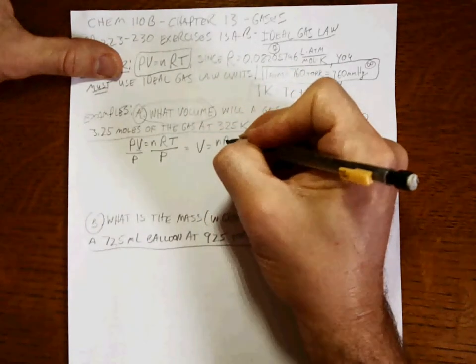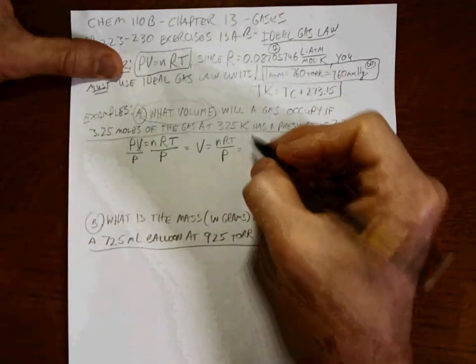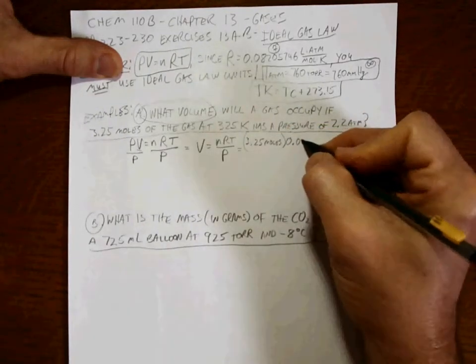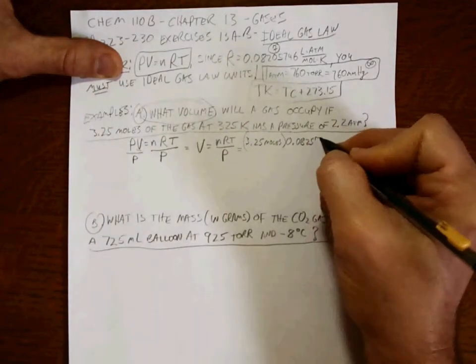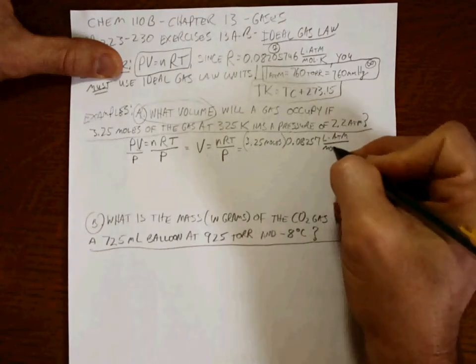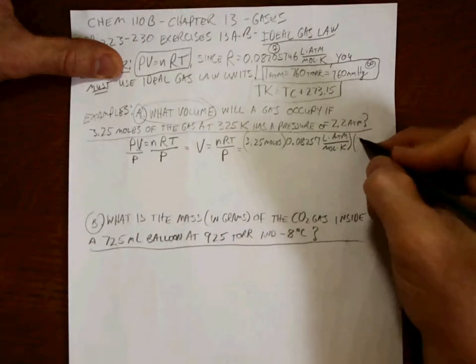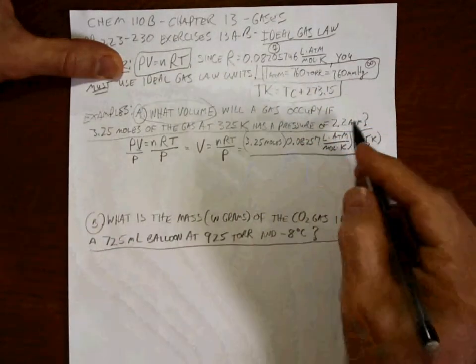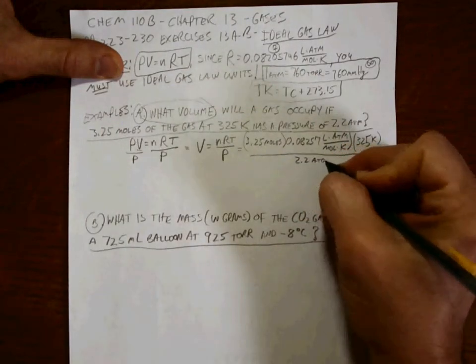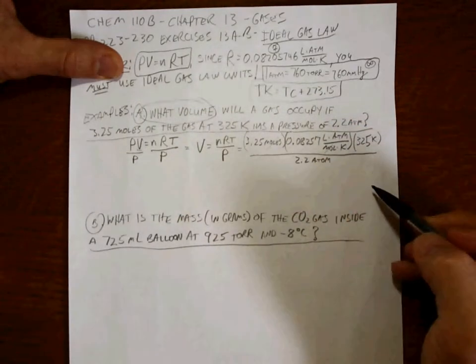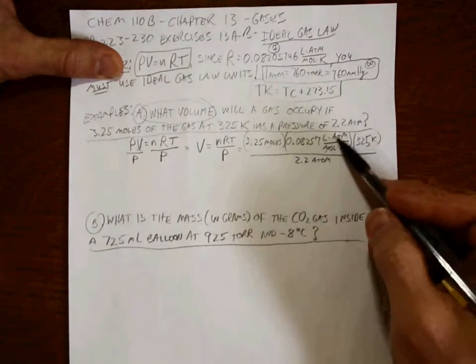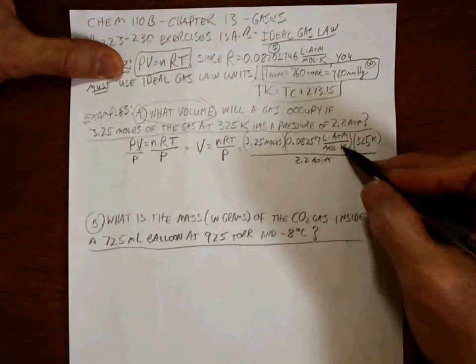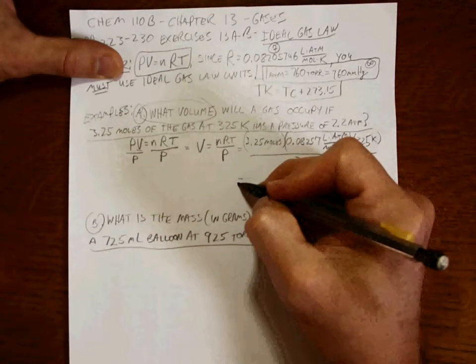So volume is equal to nRT over P. n is 3.25 moles. R, 0.08257 liter atmospheres per mole per kelvin. Temperature is 325 K. And the pressure is 2.2 atmospheres. Let's first make sure that my units cancel out completely. Moles on top, moles on bottom. Atmospheres in the numerator, atmospheres in the bottom. That cancels. K on top, K on bottom cancels. The only thing that's left is liters. That's what we want.